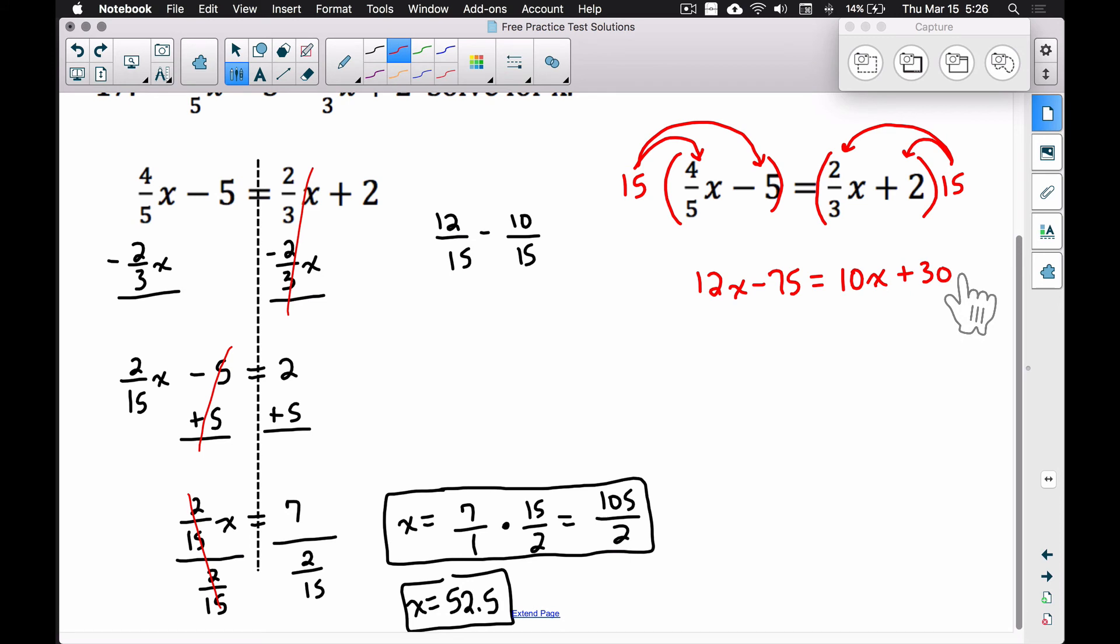Now why do I like this technique? Look at what you have: we have no fractions. We're still going to get a fraction for an answer, but we have no fractions to worry about. I'm going to move the 10X over by subtracting 10X. Minus 10X cancels out, 12X minus 10X is 2X, bring down your minus 75. This equals 30.